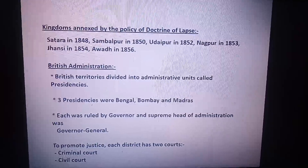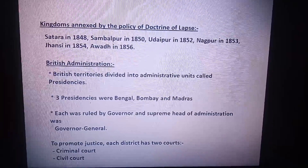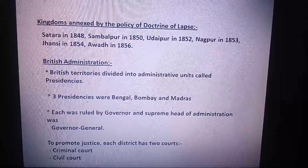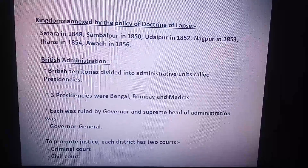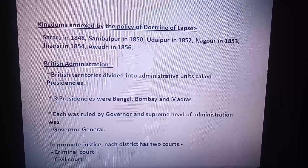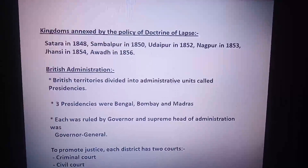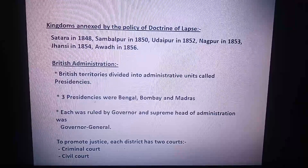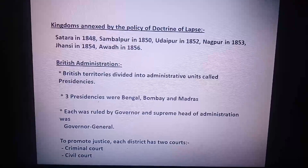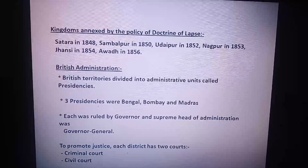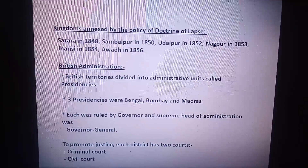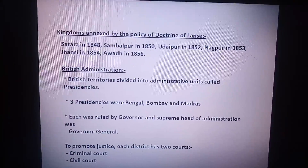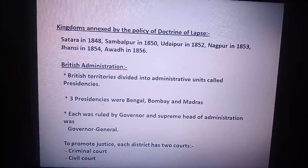Annexed by the policy of Doctrine of Lapse are Satara in the year 1848, Sambalpur in 1850, Udaipur in 1852, Nagpur in 1853, Jhansi in 1854, and Awadh in 1856. These are some of the kingdoms which were annexed under this policy.